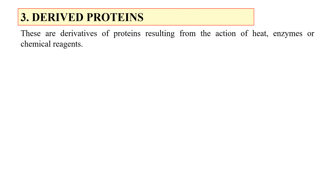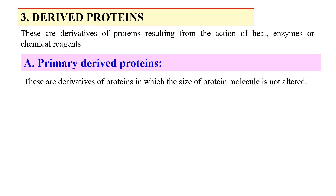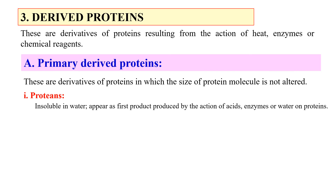The next category is derived proteins. As the name indicates, these are derivatives of proteins resulting from the action of heat, an enzyme, or a chemical agent. When a protein is treated with heat, enzyme, or a chemical, the product after treatment is known as a derived protein. The first type is primary derived proteins — these are derivatives in which the size of the protein is not changed. They are insoluble in water and appear as the first product from the action of acid, enzymes, or water. An example is protean derived from myosin.